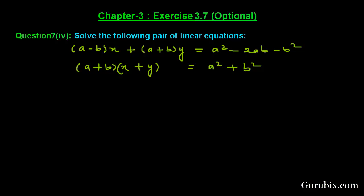Welcome friends. Let us solve the fourth part of question number 7 of exercise 3.7 of chapter 3. The question says: solve the following pair of linear equations. We have a pair of linear equations: (a minus b)x plus (a plus b)y equals a squared minus 2ab minus b squared, and the second equation is (a plus b)(ax plus y) equals a squared plus b squared.